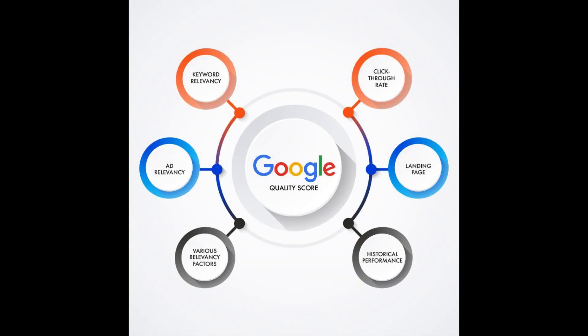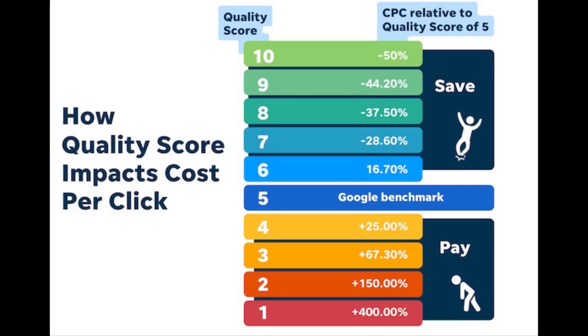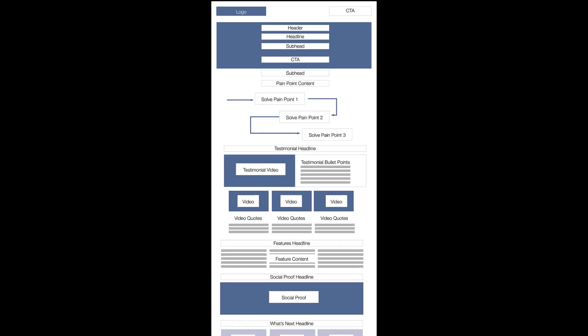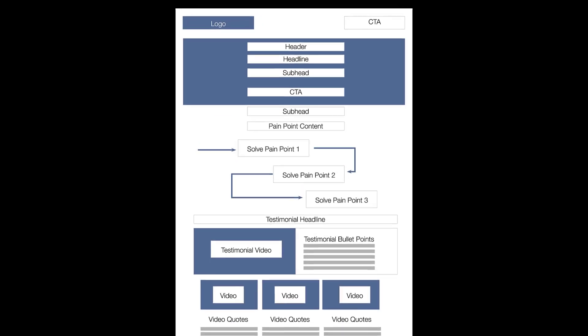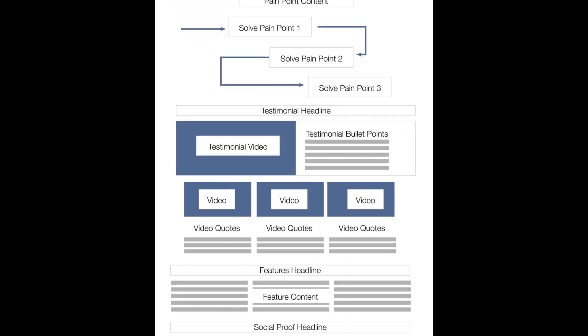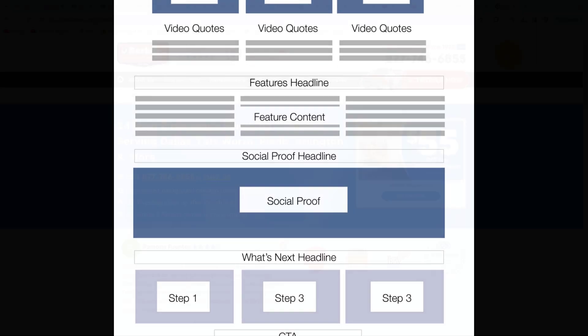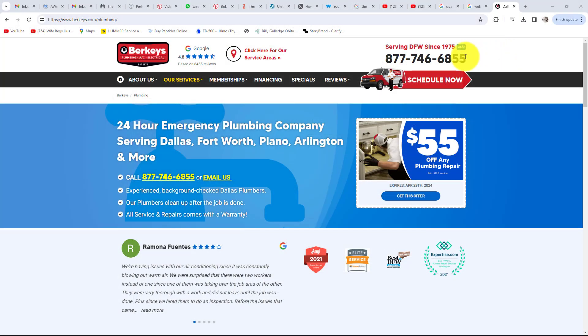Advertising platforms use a similar SEO algorithm to determine your quality score — an arbitrary score given to each page based on how it relates to the keyword. This helps platforms keep irrelevant information off certain searches, but it also allows them to artificially inflate the price of a click. The code structure for paid landing pages is similar to the SEO structure, with a few major differences.